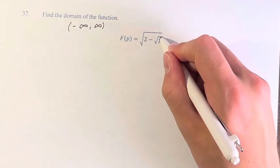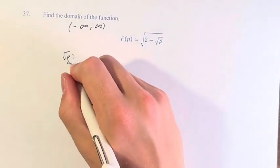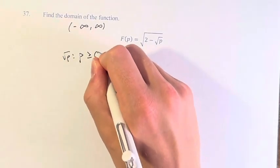We have this one right here, the square root of p, which means that what's inside of it, p, has to be greater than or equal to 0.